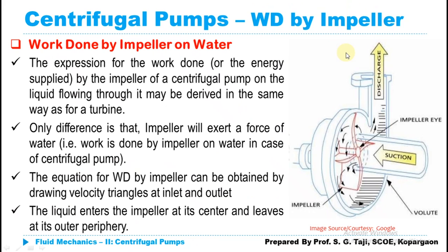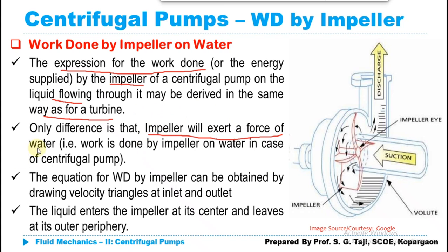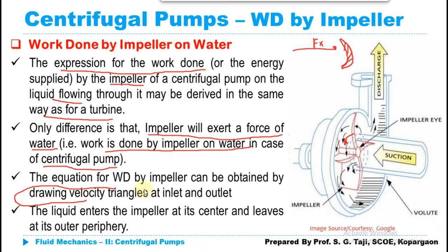Now let us move to the computation of the velocity vector diagram. The expression for work done per second by the impeller of the pump on the liquid may be derived in the same way as for a turbine. The only difference is that here the impeller exerts force on the water, whereas in a turbine the fluid jet strikes the curved vane. This work done expression can be derived by drawing velocity triangles at inlet and outlet.